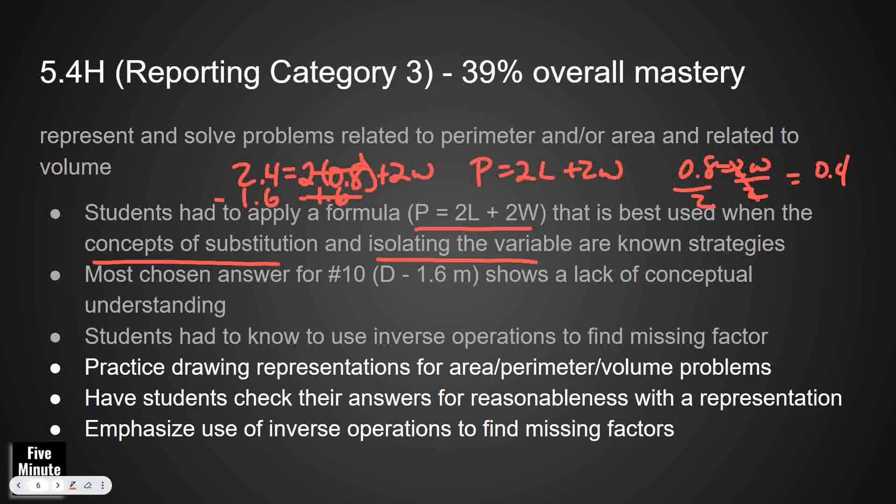That lack of conceptual understanding really showed because they didn't know how to find a missing side length given the perimeter. And then they had to use inverse operations to find the missing factor. So they don't necessarily know about substitution, isolating the variable. In both situations, they had to use the inverse operation. So they had to go 96 equals base times 6. They had to know, I can use division. 96 divided by 6 equals B. That's a fact family that they should know about. But that's not one that they probably practice every single day.